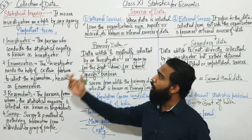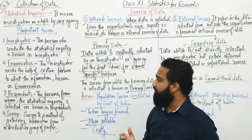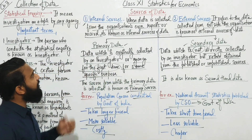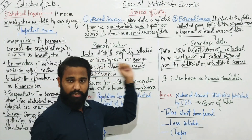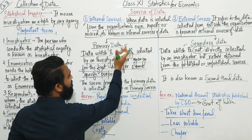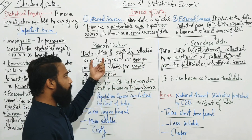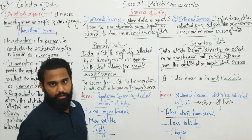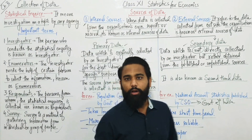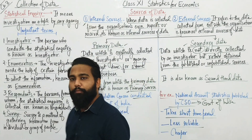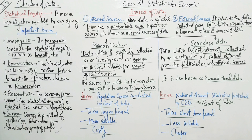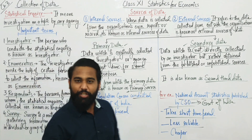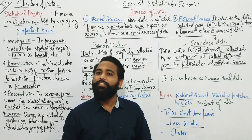So students, you have covered all the important topics. You know what statistical inquiry is, what the different sources of data are, what internal and external sources are, and the bifurcation of primary data and secondary data along with their examples and characteristics. Please take a clear screenshot to complete your notes. Pause this video and take a screenshot. That's all for this video — see you soon.